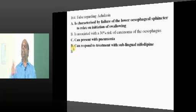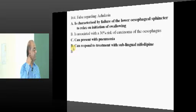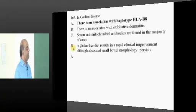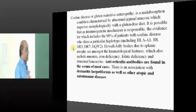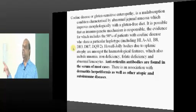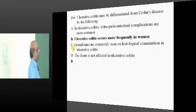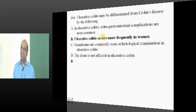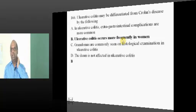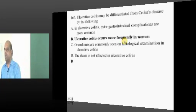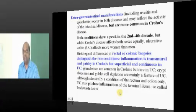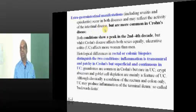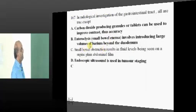Achalasia leads to carcinoma of the esophagus in about 10% of cases. In celiac disease, HLA-B8 positivity is found, along with dermatitis herpetiformis as an association, and anti-reticulin antibodies are present. Ulcerative colitis is more common in women. You must know all differences between ulcerative colitis and Crohn's. Extra-GIT manifestations like uveitis and episcleritis are more common in Crohn's than in ulcerative colitis.